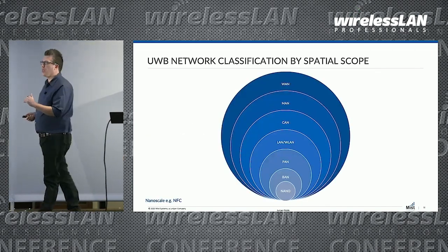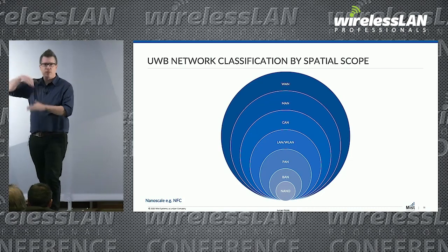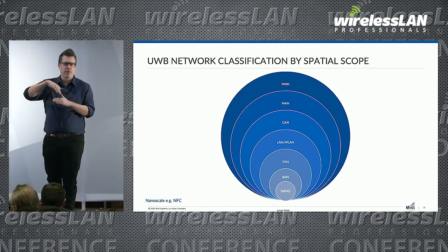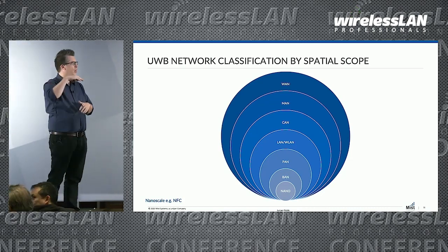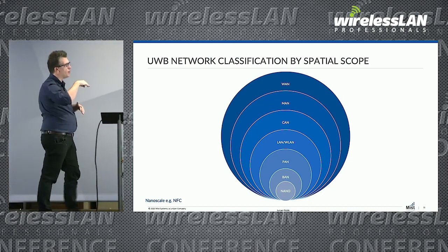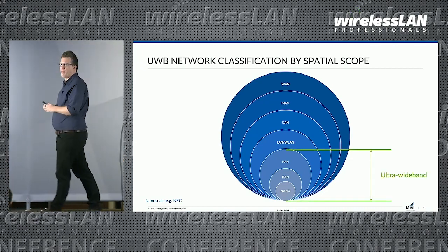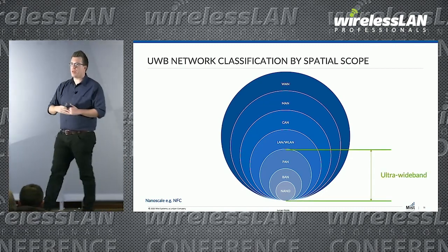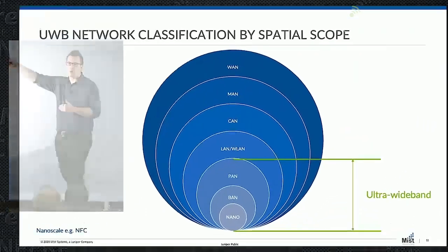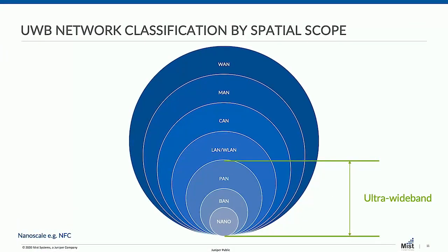This particular image is probably familiar to you — you've probably seen the classification of networks based on spatial scope. Where does ultrawideband fit? That's where ultrawideband fits: anywhere from nanoscale up to personal area network scales. Designed to be in close proximity, because of the low power spectral density it operates at and the really wide bandwidth, it is designed for very short range communications and measurements.